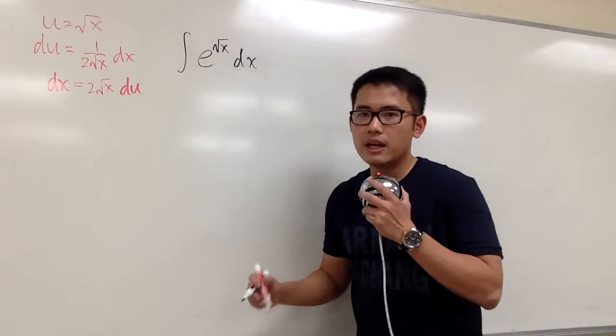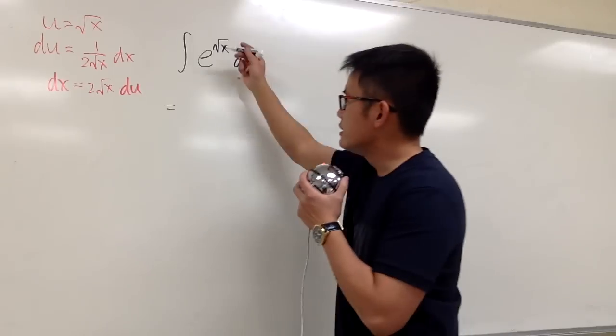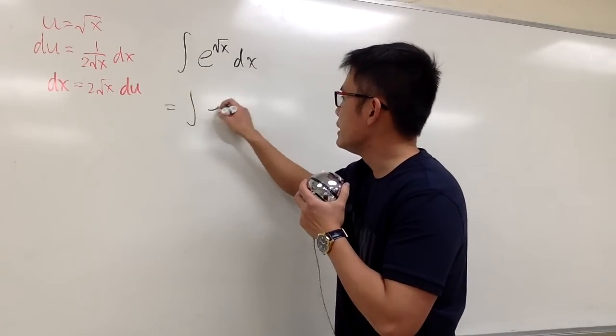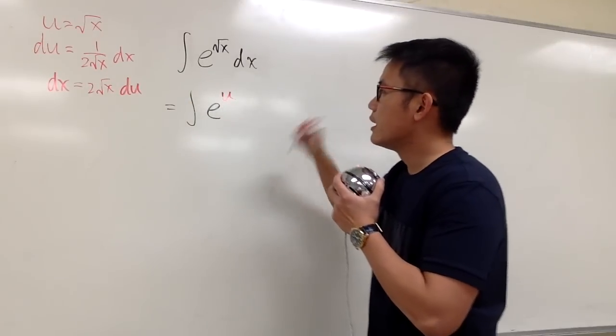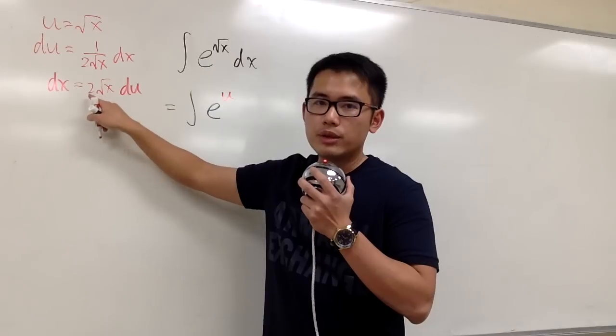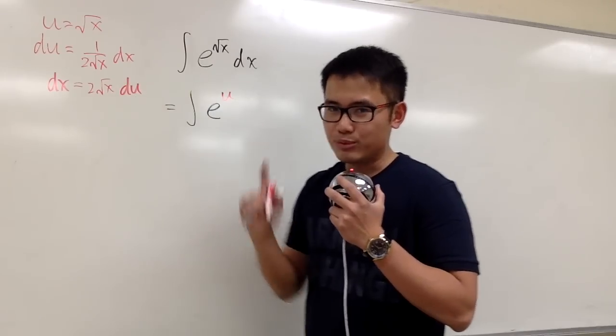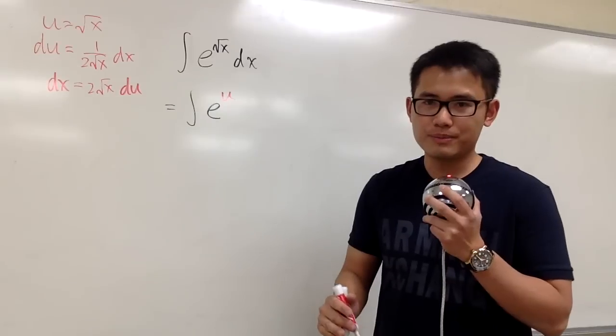So that's what we have so far. And now let me attempt to take this integral into the u world. This is going to be the integral of e to the square root of x, which is the u. So we have it like this. But then dx, as we can see, dx is the same as 2 square root of x du. And remember, x is not allowed in the u world. So what can we do?